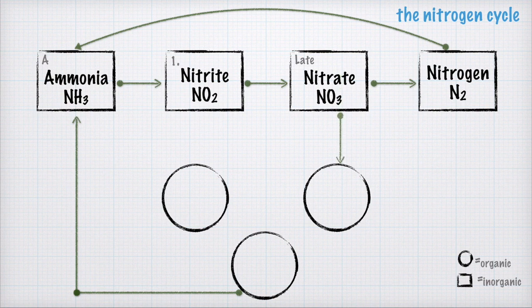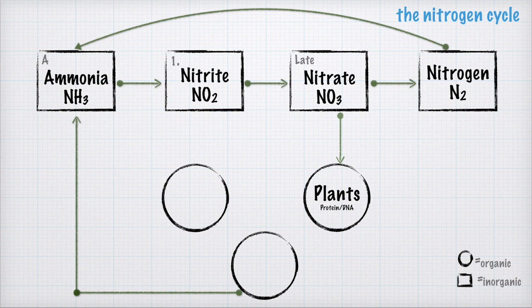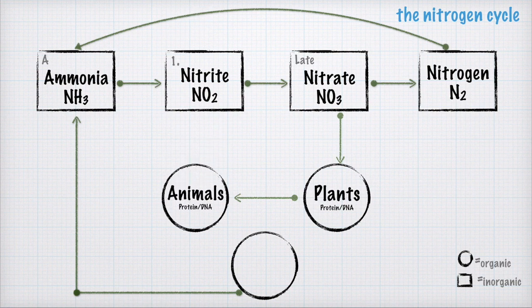Nitrate NO3 is kind of the candy for plants — plants love this stuff, and the whole cycle is set up around making sure we have enough nitrate in the soil to feed the plants. Plants need nitrogen for two basic things: DNA, where nitrogen is the featured element, and also proteins. Plants convert sunlight and nutrients into glucose, and then animals take advantage of that. Animals need nitrogen for the same reason — for DNA and proteins.